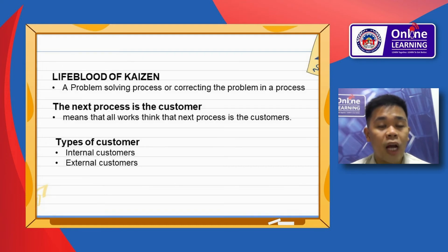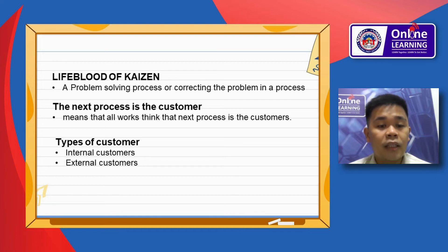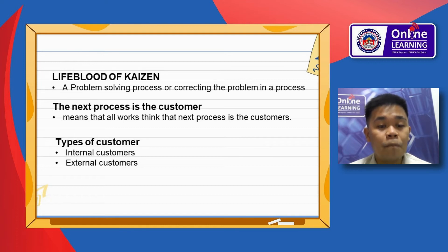The lifeblood of Kaizen is a problem-solving process of correcting problems in a process. The next process is the customer — meaning that all workers think of the next process as their customer. Types of customers include internal and external customers.